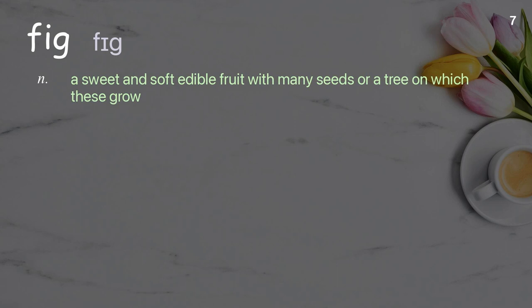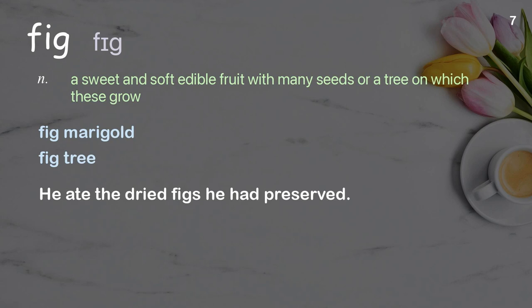Fig: a sweet and soft edible fruit with many seeds, or a tree on which these grow. Examples: fig marigold; fig tree; he ate the dried figs he had preserved.